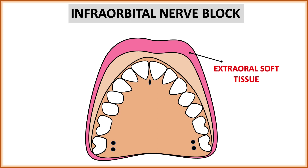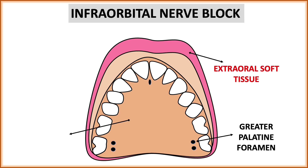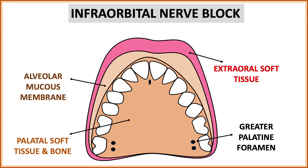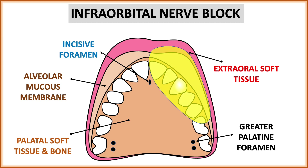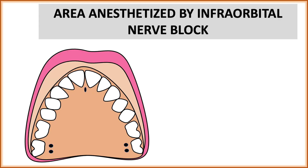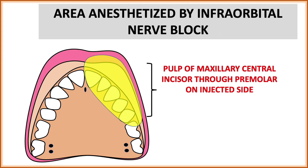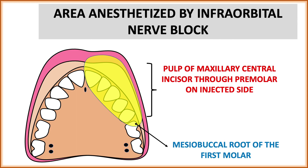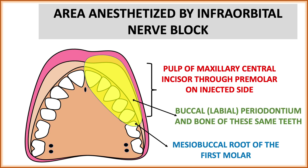Looking at the figure showing extra-oral soft tissue, the greater palatine foramen, palatal soft tissue and bone, alveolar mucous membrane, and incisive foramen: the area marked in yellow shows the area anesthetized by the infraorbital nerve block — from the central incisor to the premolar, including the mesiobuccal root of the first molar. The area anesthetized includes the pulp of the maxillary central incisor through the premolars on the injected side, the mesiobuccal root of the first molar only, and the buccal or labial periodontium and bone of those same teeth.